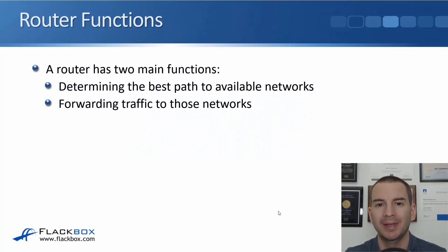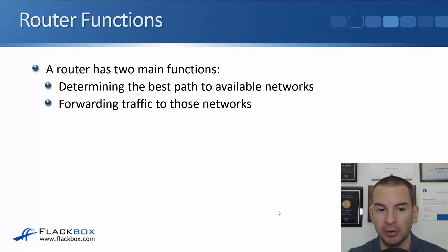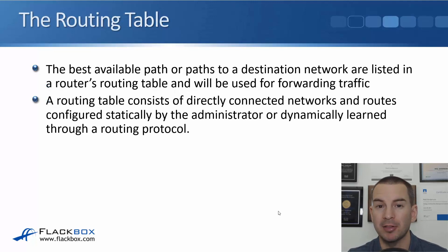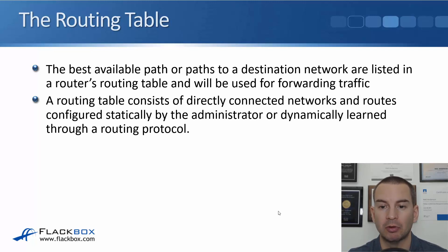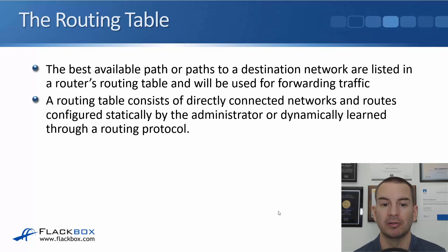In this lecture, you'll learn about connected and local routes, which are the first type of routes that you're going to have on your router. A router has two main functions: to determine the best path to available networks, and then to forward actual production traffic to those networks. The best available paths to a destination network are listed in the router's routing table. A routing table consists of directly connected networks and routes configured statically by the administrator or dynamically learned through a routing protocol.